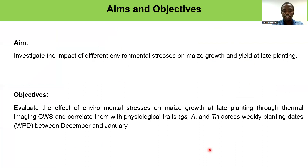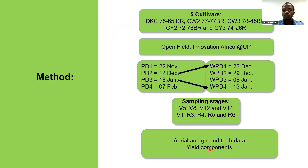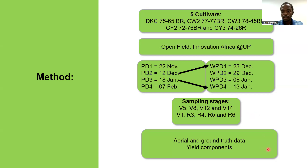We also aimed to evaluate the effect of environmental stresses on maize growth at late planting through thermal imaging using the Crop Water Stress Index, and correlate with physiological traits. To achieve this, we planted five cultivars in an open field at the farm in Limpopo, South Africa, and introduced four weekly planting dates between planting date two and planting date three. We sampled from growth stage V5 up until R6, collecting both aerial and ground data.